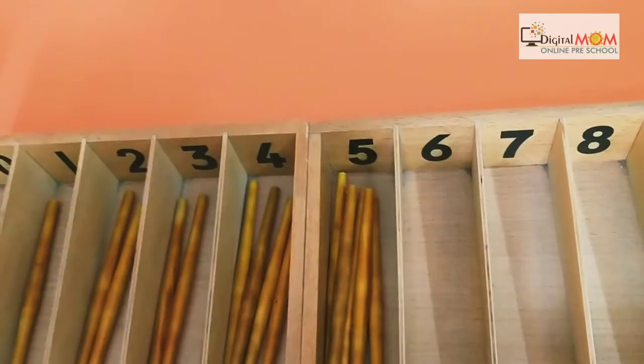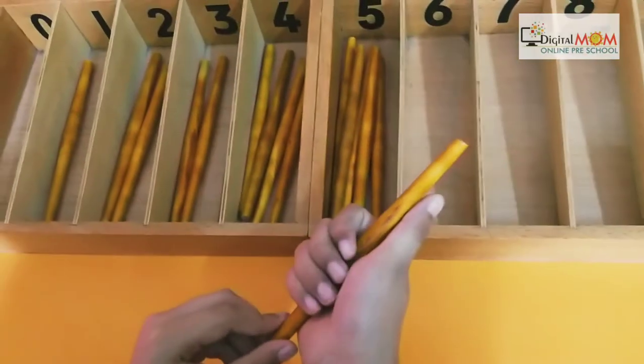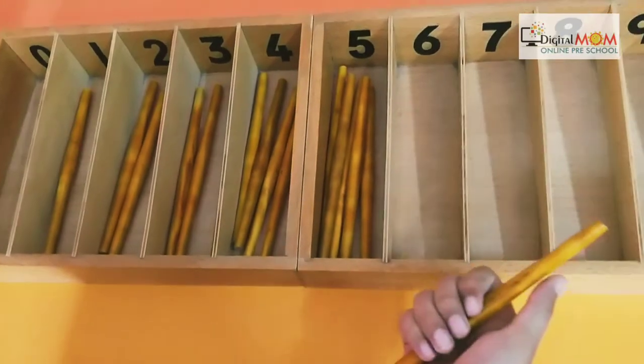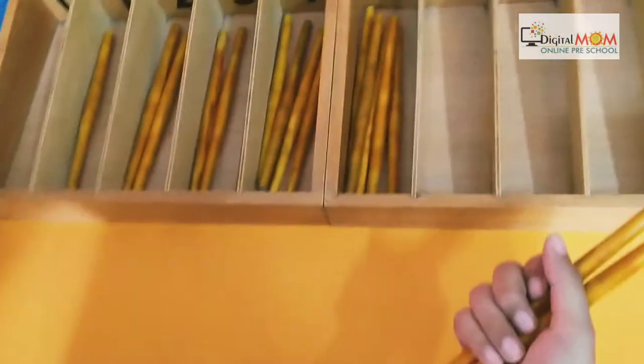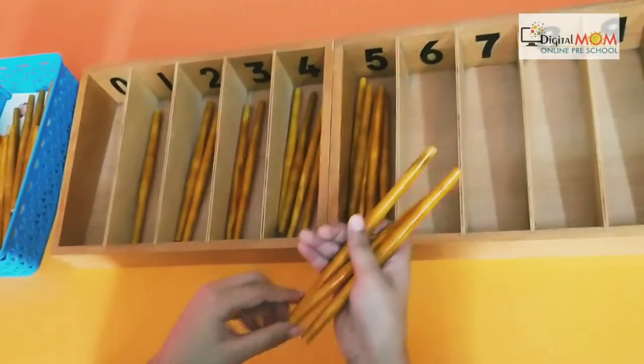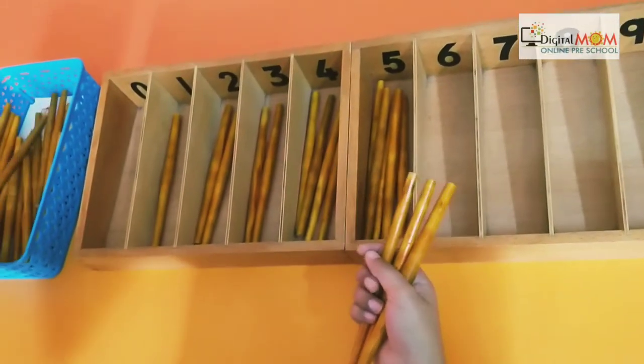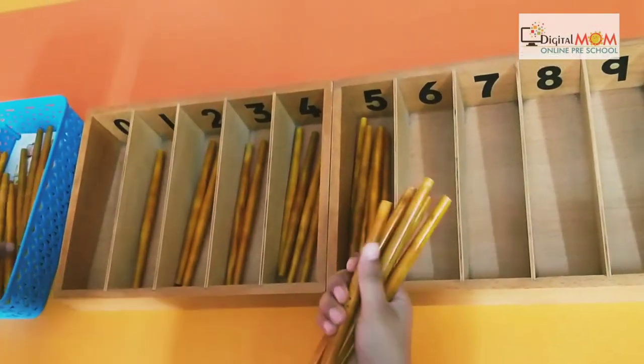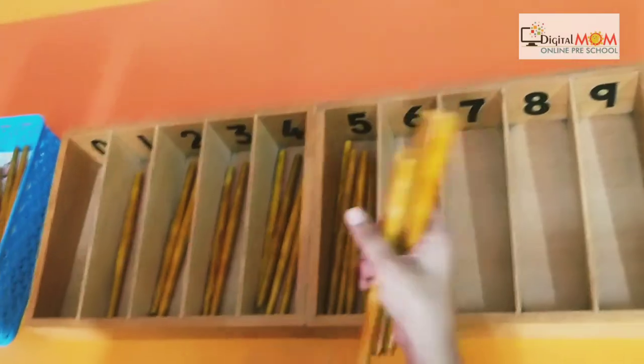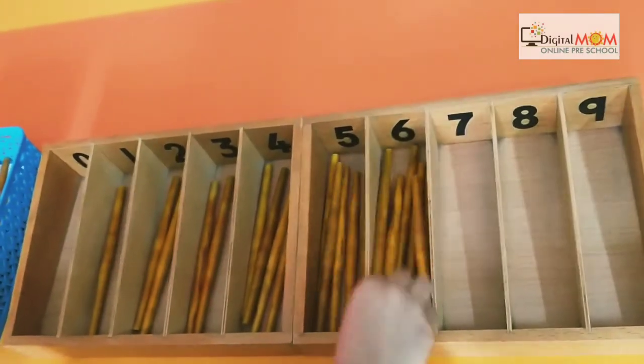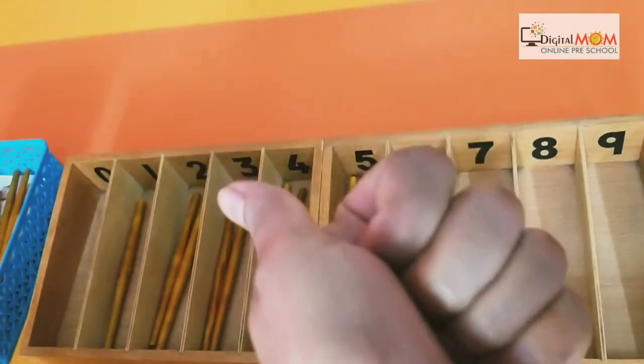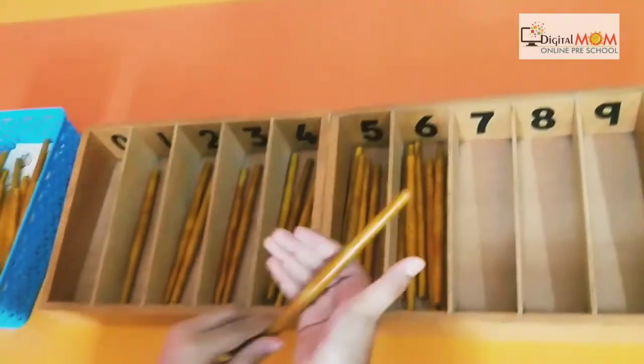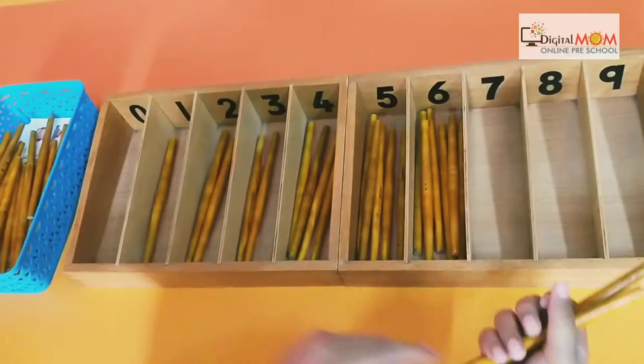Now number six. One, one more - two. You can see the child is focusing on the counting, holding spindles from one hand and transferring to another. Don't forget, he has to hold in the wrist like this so that he can view the number.